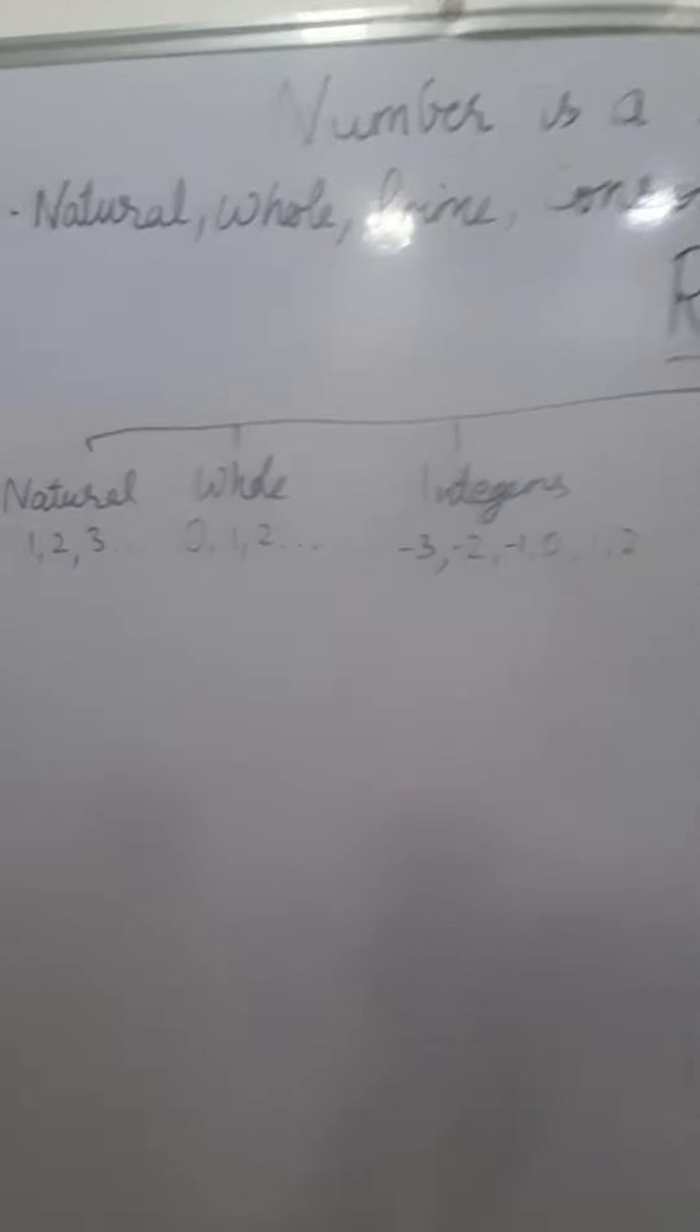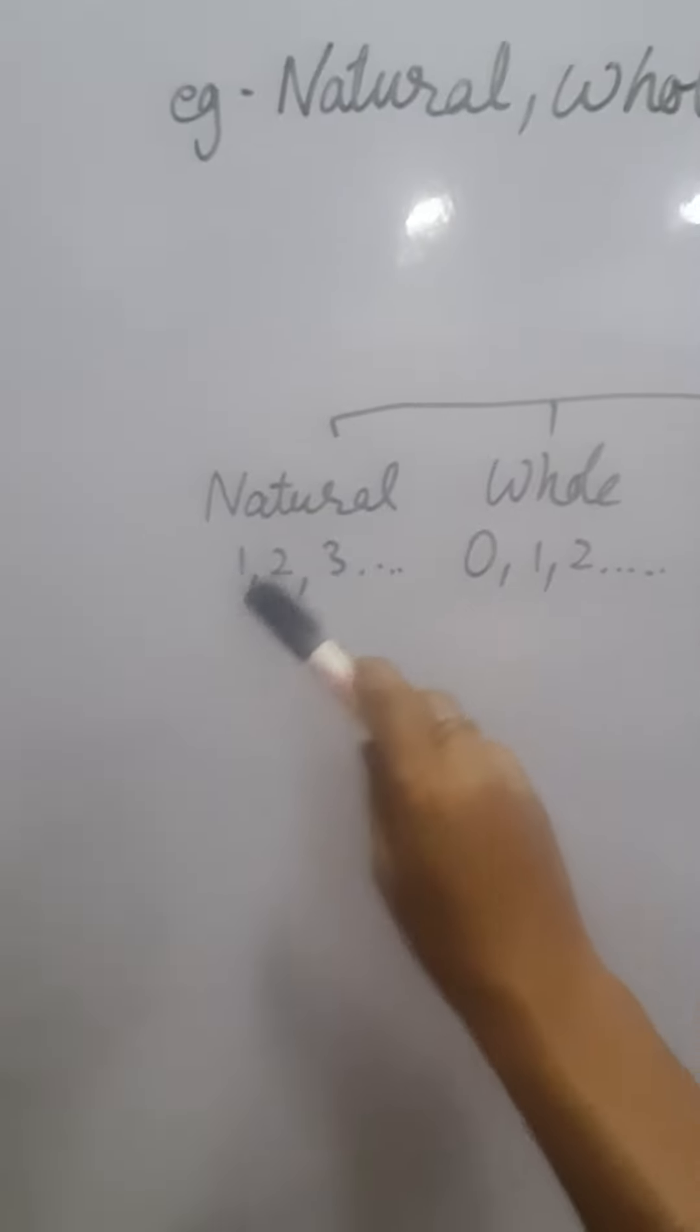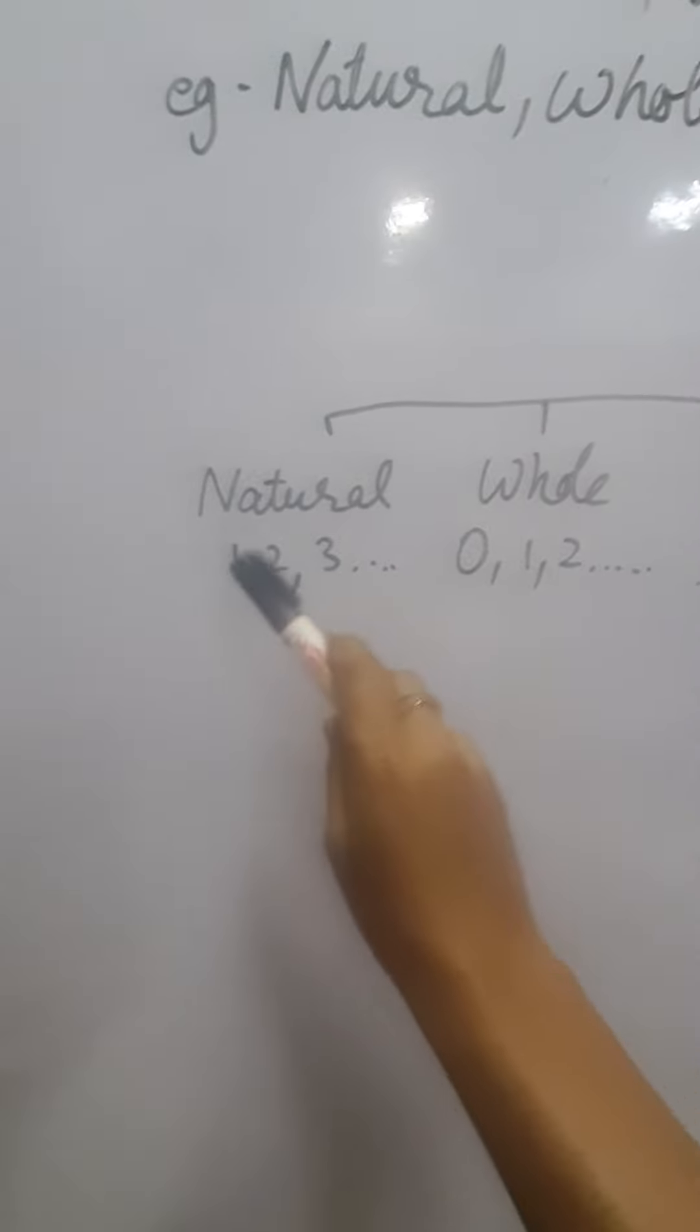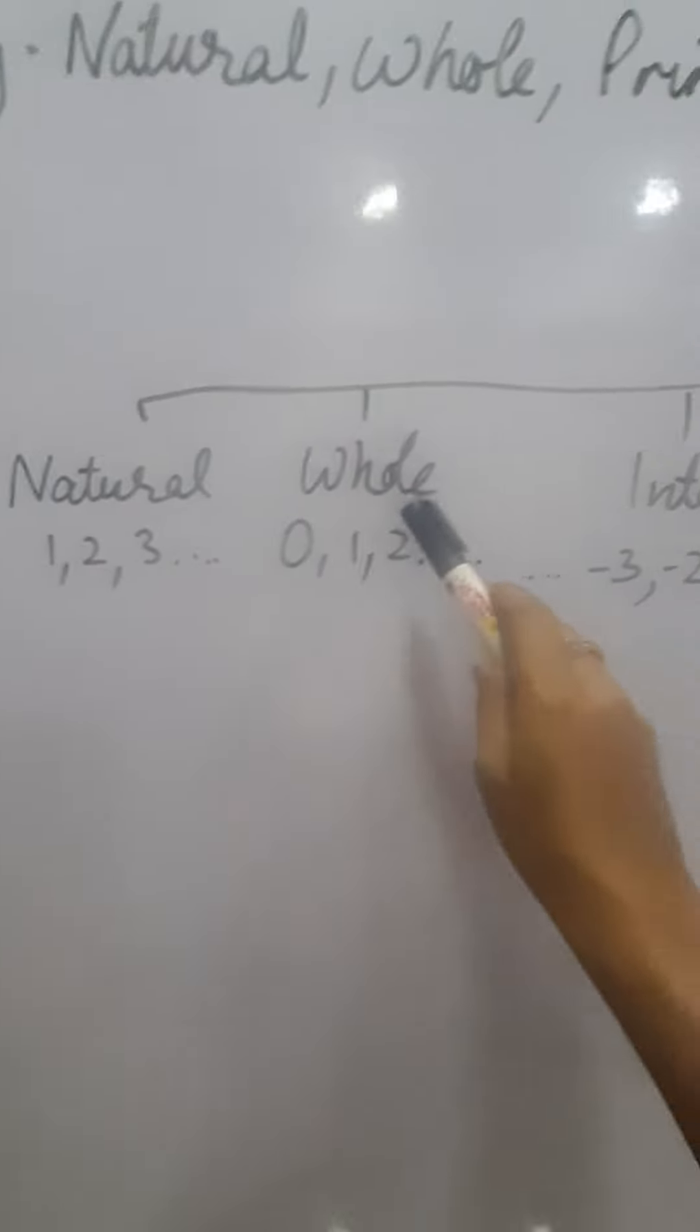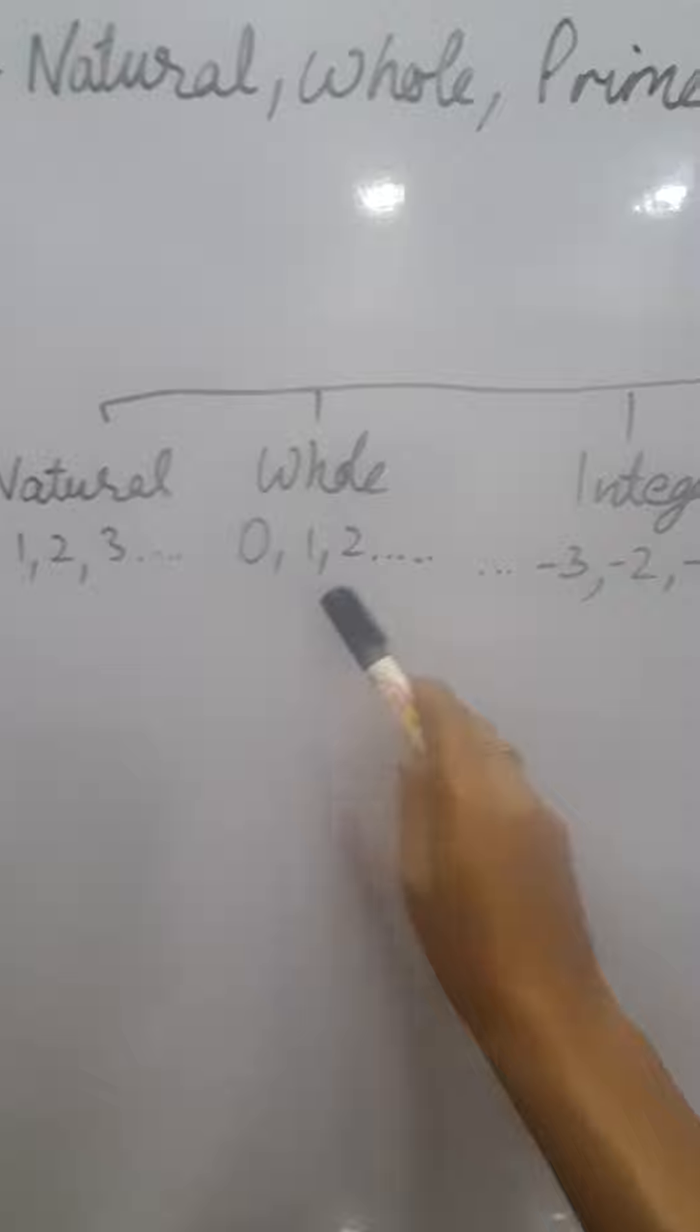So real numbers are classified as natural numbers: 1, 2, 3, 4, 0 not included; whole numbers where 0 is included;